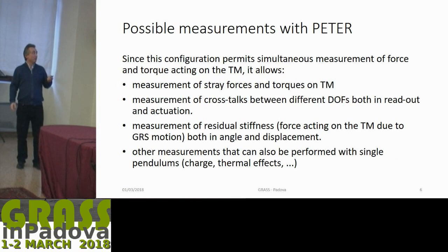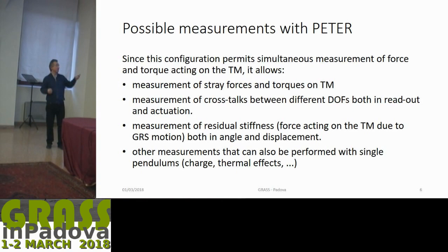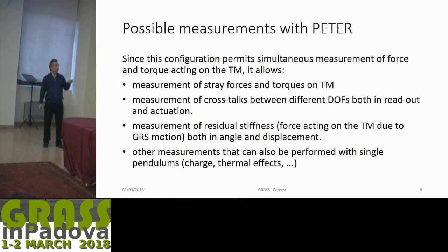Since this configuration permits simultaneous measurement of force and torque on the test mass, besides the direct measurement of force and torque, we can measure crosstalks between different degrees of freedom, both in readout and actuation. This means measuring the torque when we actuate in force, or vice versa. We can also measure residual stiffness — that is, the force acting on the test mass due to GRS motion — and other measurements that can also be performed with a single-stage torsion pendulum.